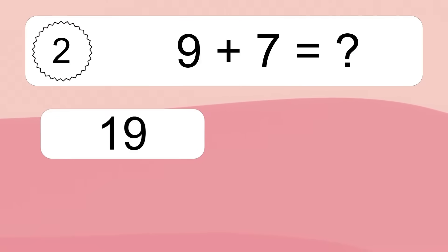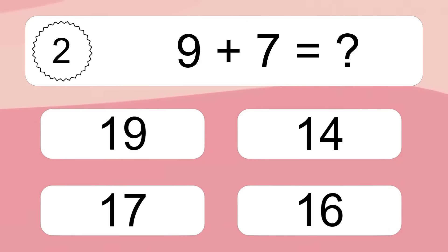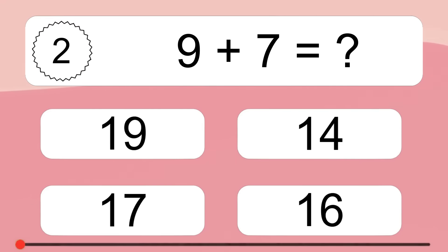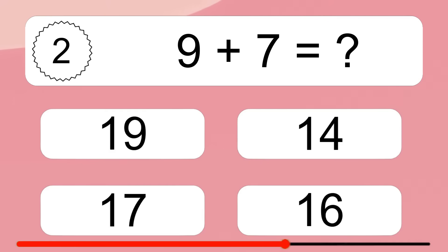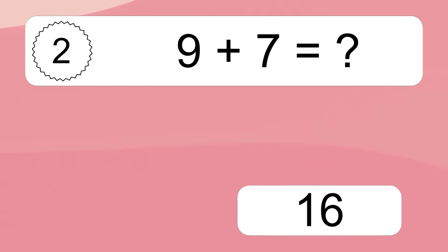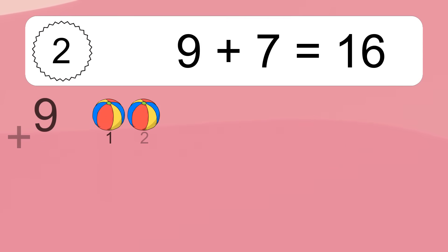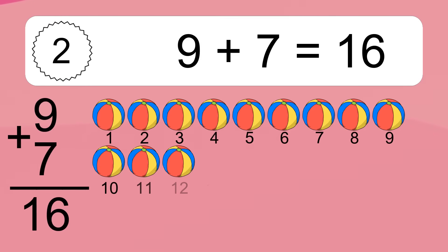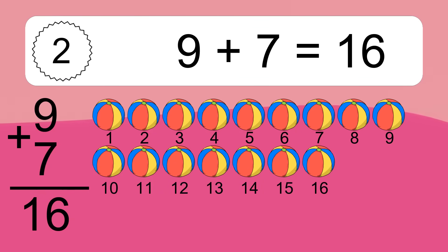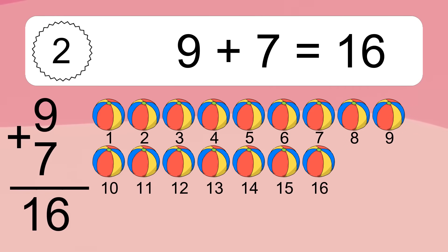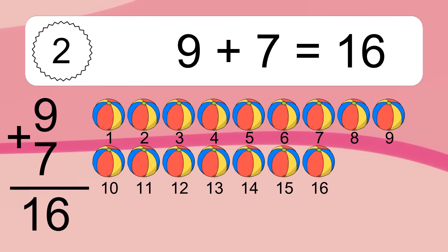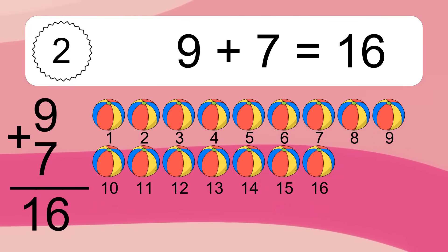9 plus 7 equals what? 9 plus 7 equals 16. Let's count it: 1, 2, 3, 4, 5, 6, 7, 8, 9, 10, 11, 12, 13, 14, 15, 16.